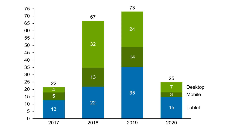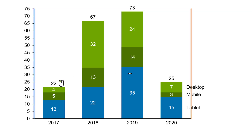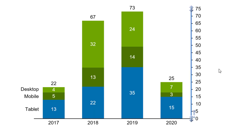By default, a y-axis is positioned to the left of a chart. You can, however, change this position by simply clicking on the axis and dragging it to the other side of the chart. Release to place it there.